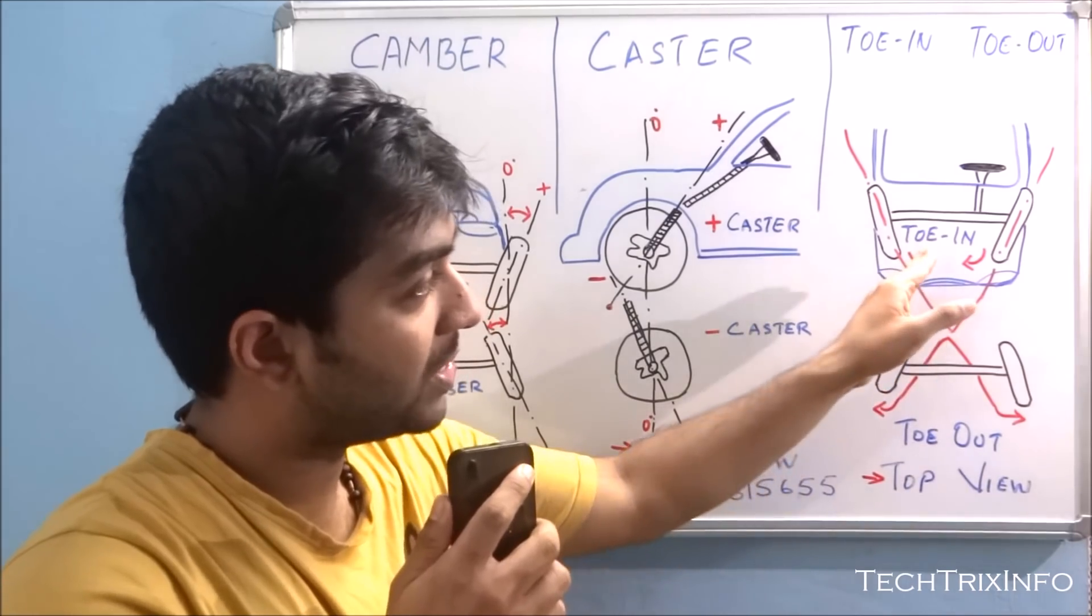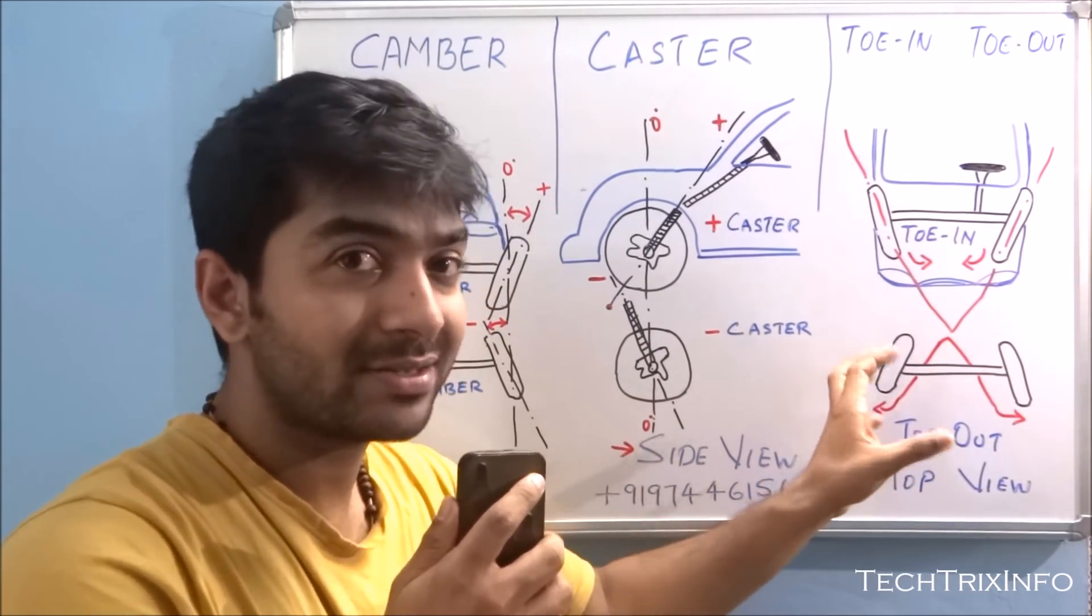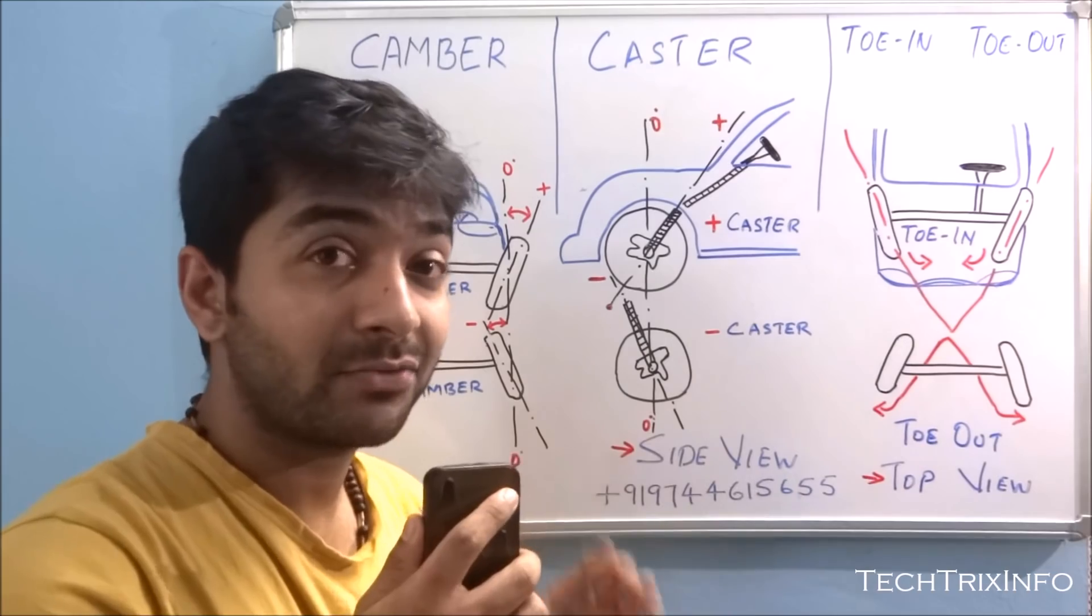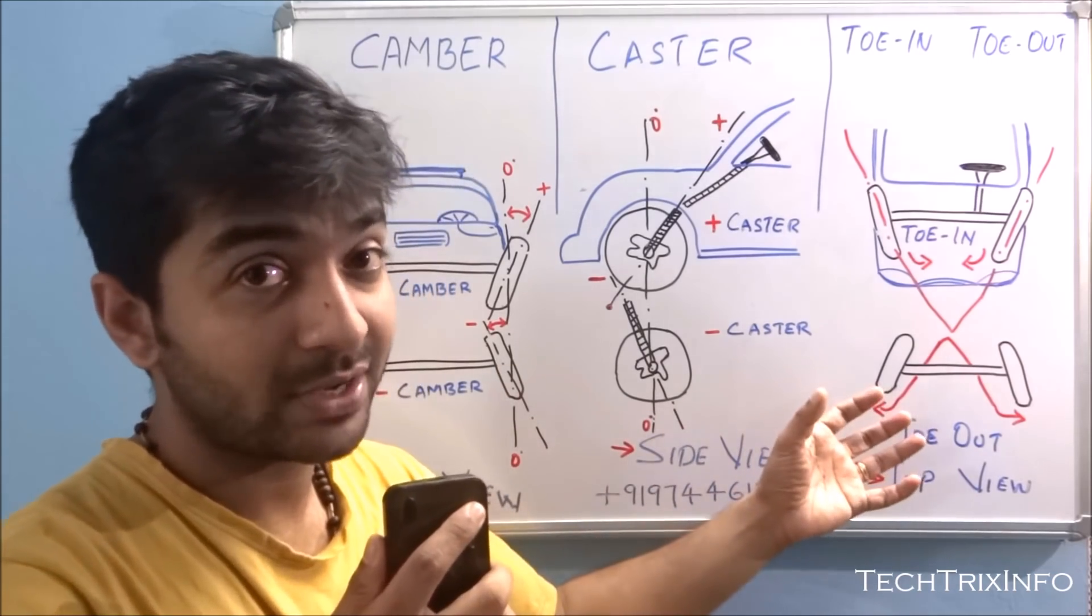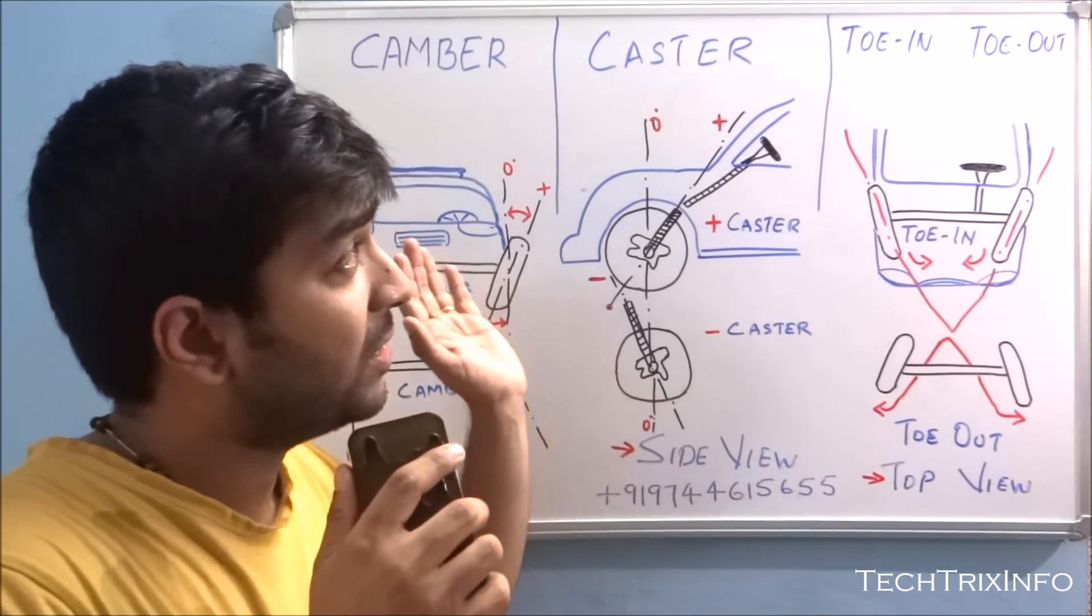So this is toe-in and this is toe-out. It's quite simple from the drawing itself for you to understand what is toe-in and toe-out. I believe you got an idea of these topics.